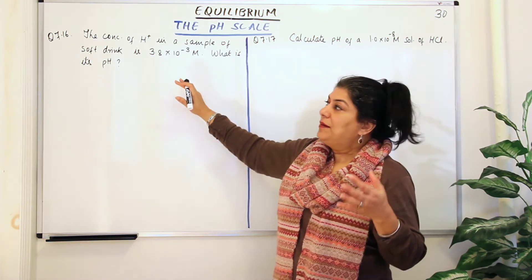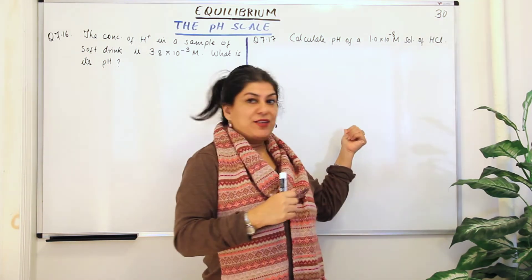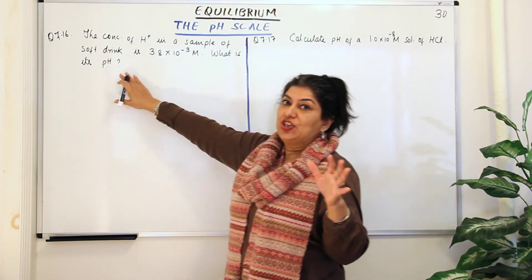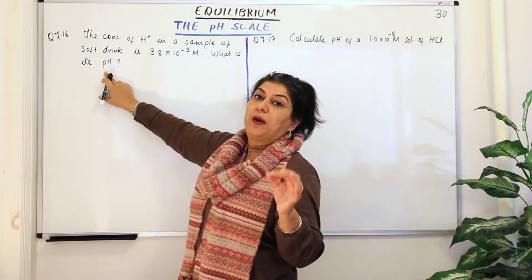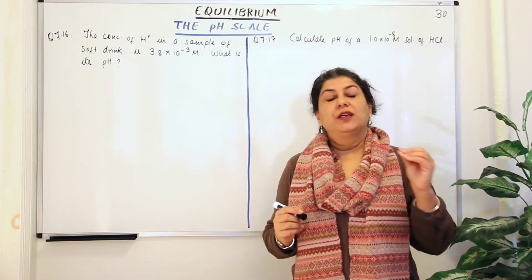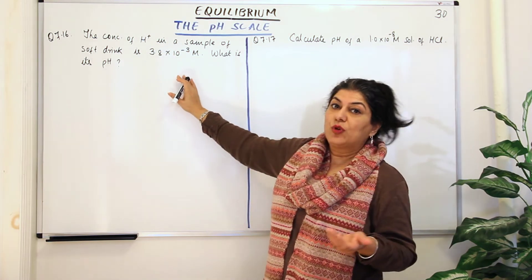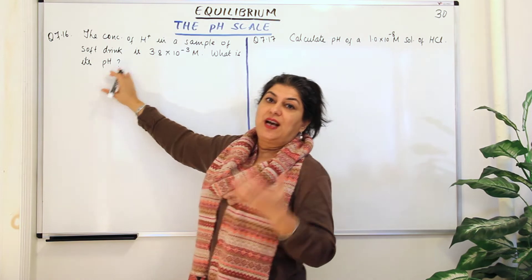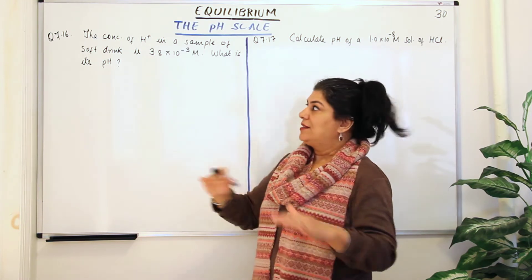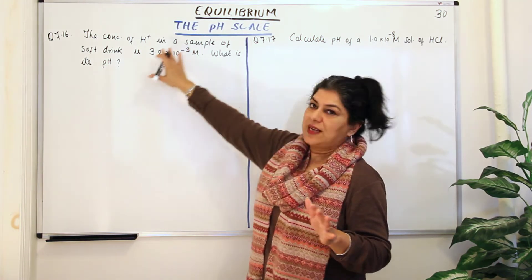In many questions you will have the hydrogen ion concentration given to you, and in others — like the next one we will be doing — the hydrogen ion concentration will not be given to you. So, the definition of pH is the potential of hydrogen or the power of hydrogen. It is the negative log of the hydrogen ion concentration in a solution. If the hydrogen ion concentration is given, this is the most basic kind of question.